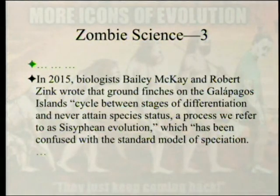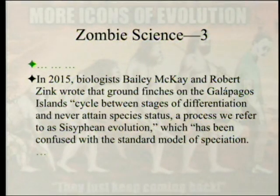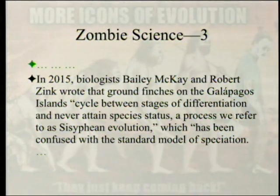In 2015, biologists Bailey McKay and Robert Zink wrote that ground finches on the Galapagos cycle between stages of differentiation and never attain species status — a process they called 'Sisyphean evolution,' confused with the standard model of speciation. Like Sisyphus doomed to push a rock to the top of a hill only for it to roll back down, nothing net is actually happening.